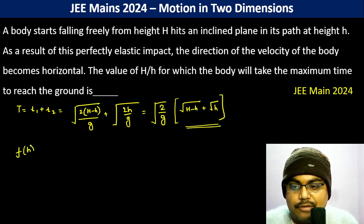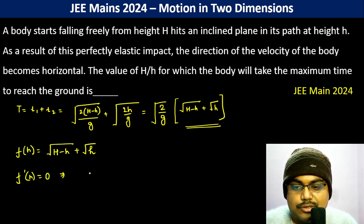So we can write f of h equals root over h minus h plus root h. f dash h should be 0.